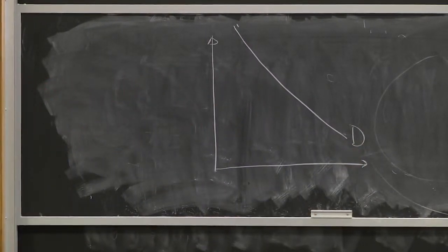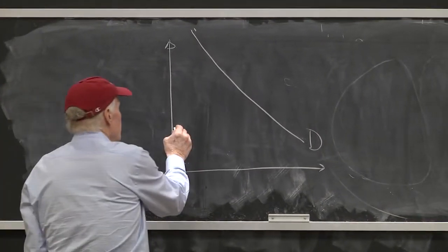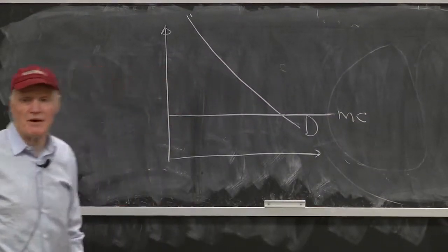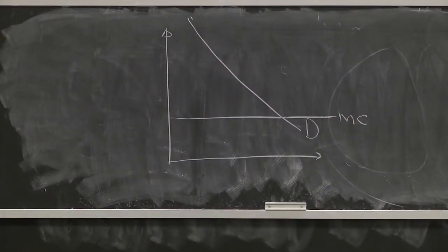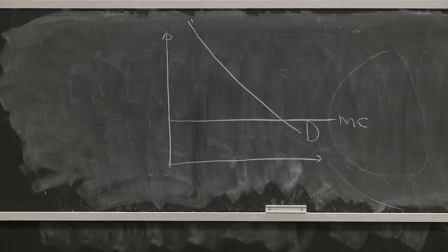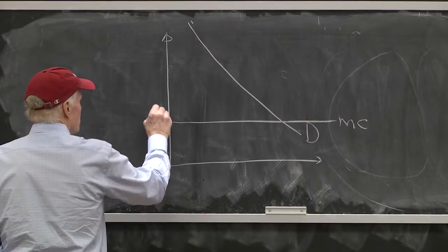They're a constant marginal cost industry. They might be upward sloping, who cares? But they're a constant marginal cost industry. And the competitive price would be equal to marginal cost in equilibrium.